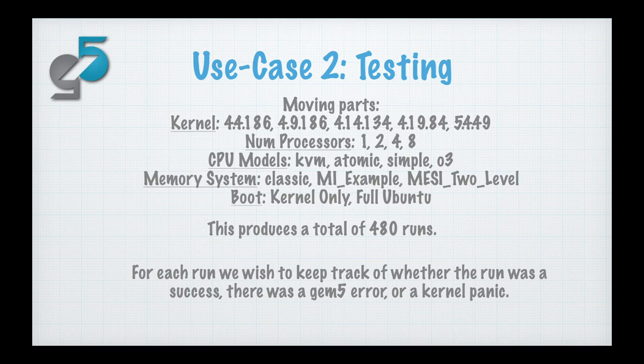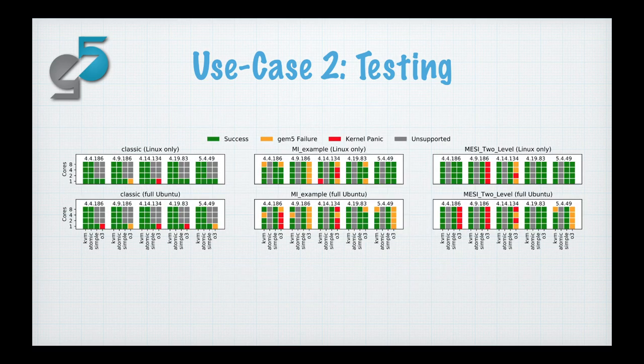But with GEM5 Resources, the process is just like use case one. You download the resources you need from GEM5 Resources — in this case the kernels and the disk images — then register these artifacts inside the database. You create your run script and then you execute. When complete, all the data is in the database, you query the database and get the results.